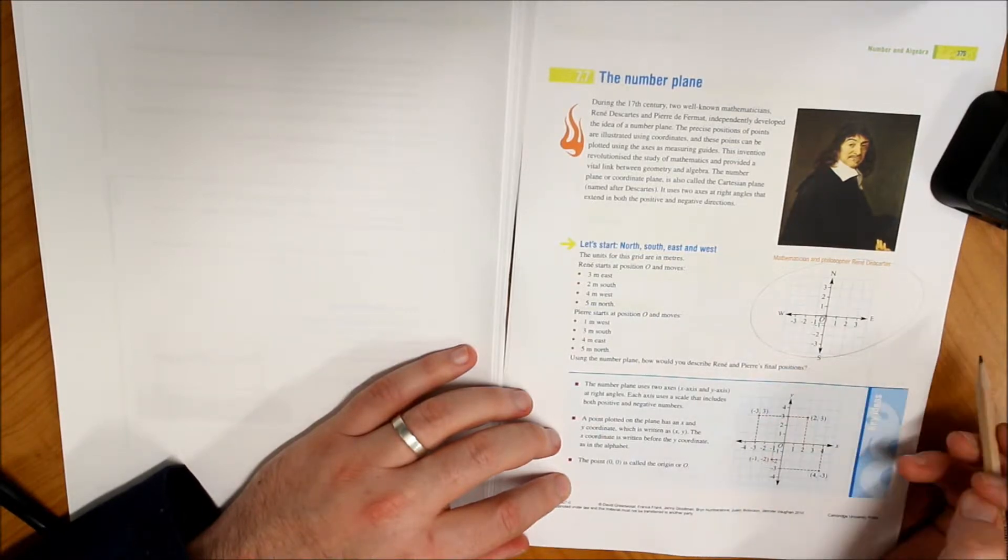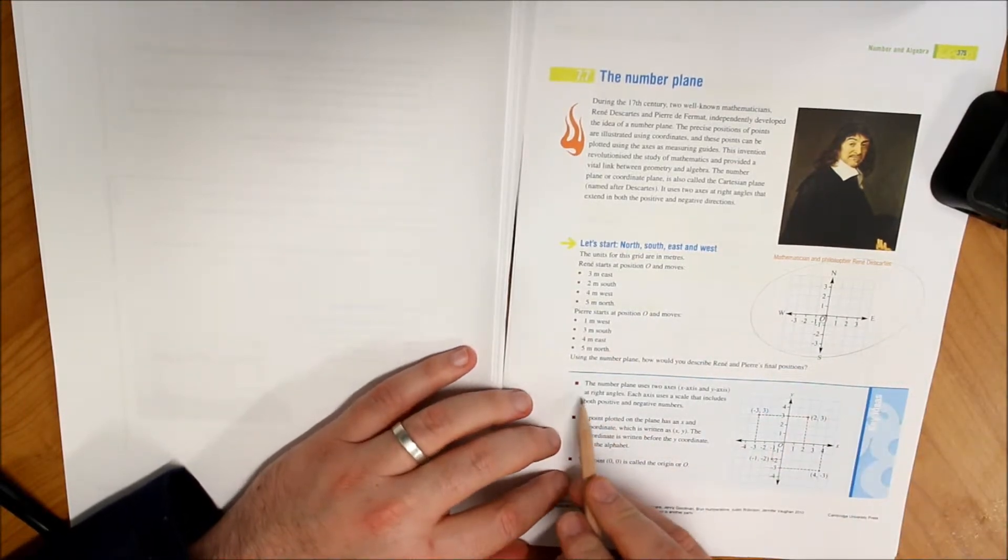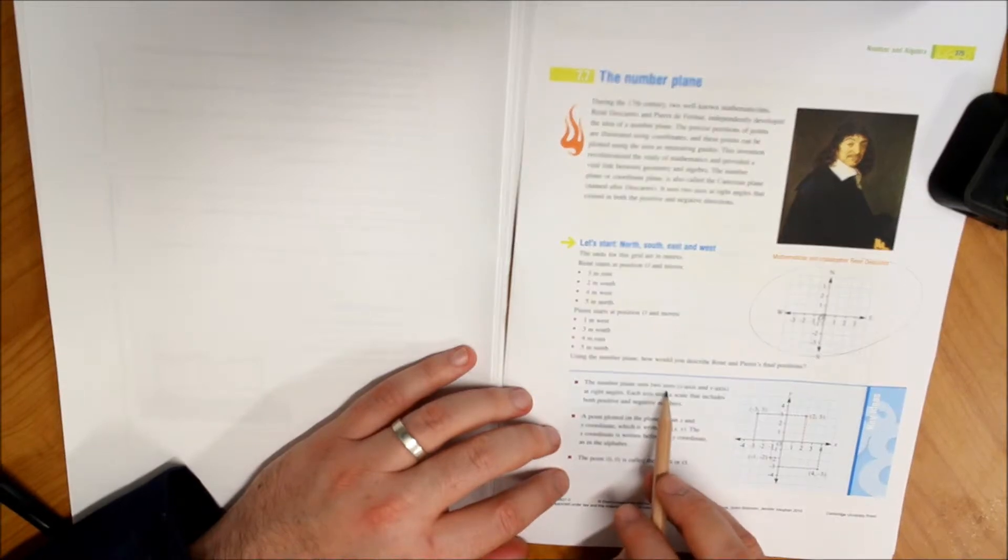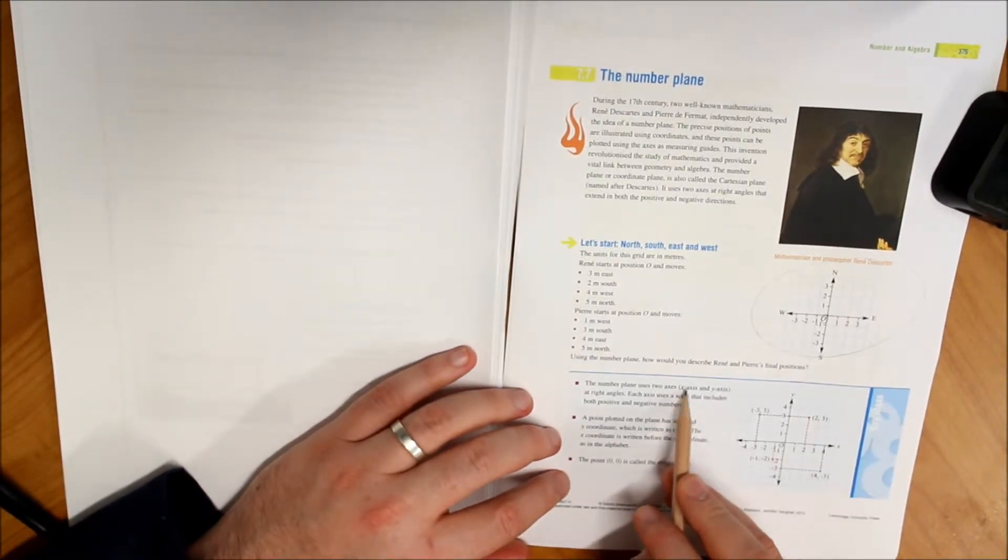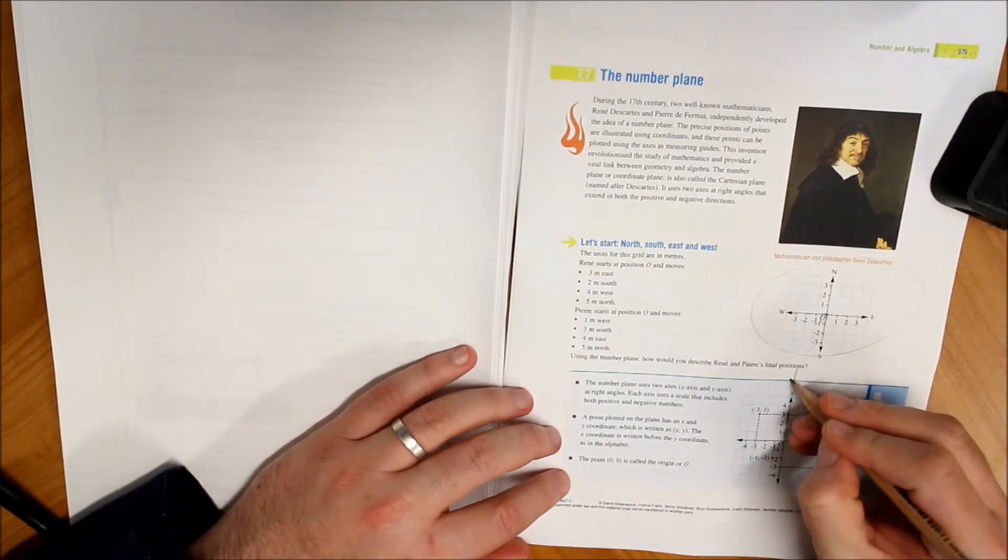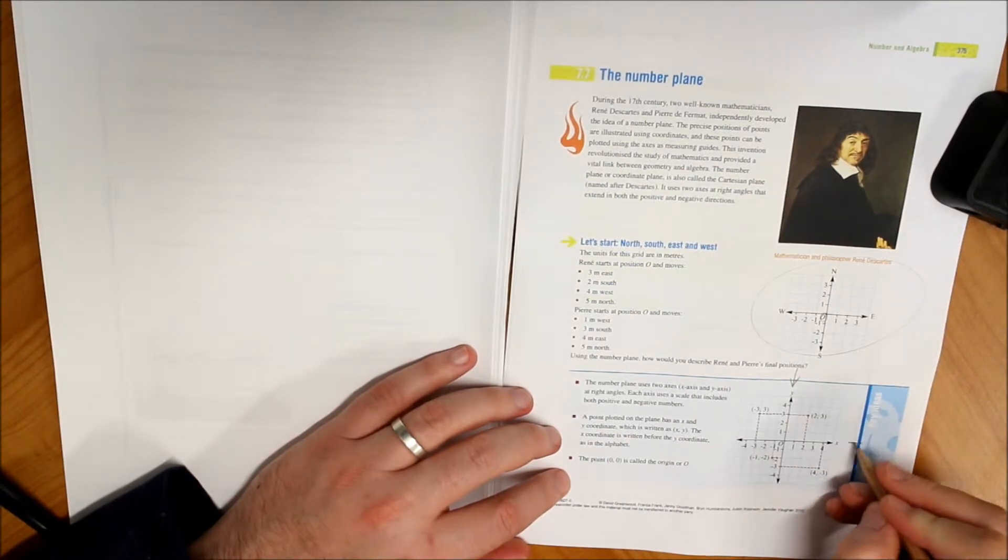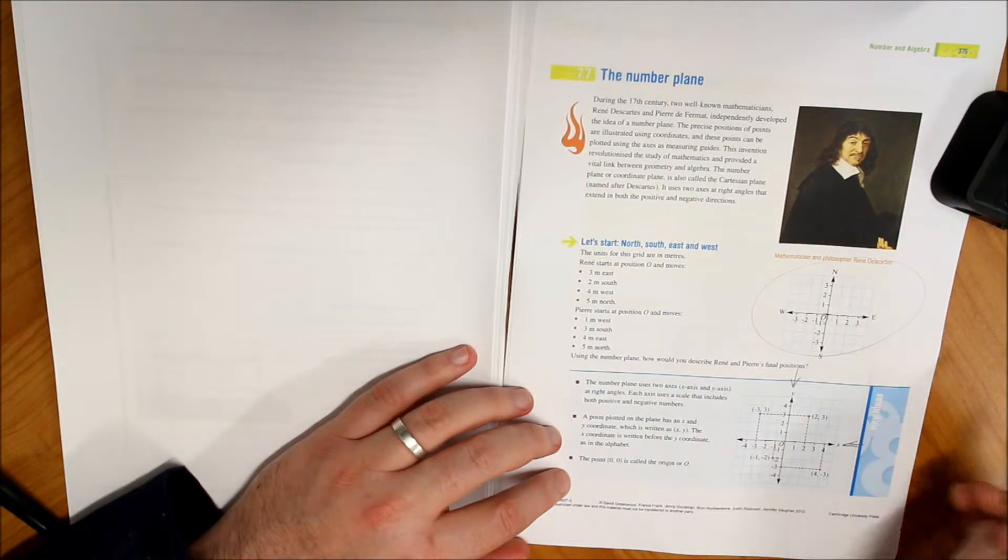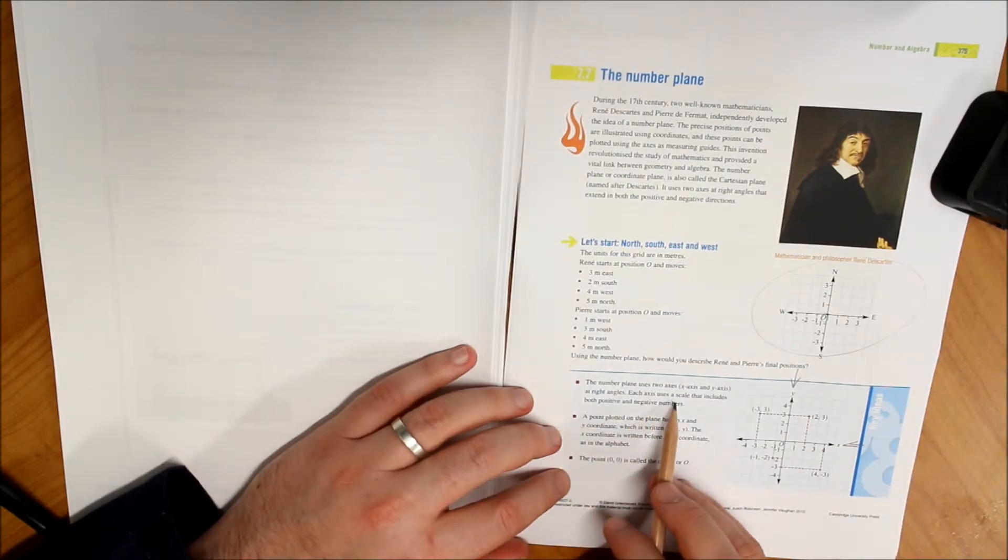So key ideas: the number plane uses two axes. You've got the x-axis and the y-axis, all right? The y-axis is this one here, your x-axis is that one there.